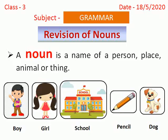Good morning children. In our previous chapter, we have learnt about nouns. A noun is a name of a person, place, animal or thing. For example, boy, girl, school, pencil, dog.